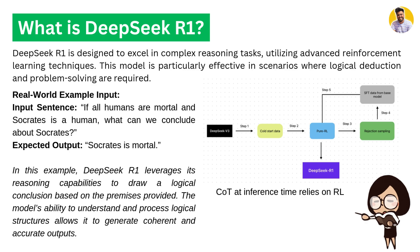DeepSeek R1 is designed to excel in complex reasoning tasks utilizing advanced reinforcement learning techniques. This is particularly effective in scenarios where logical reasoning and problem solving are required. For example, if all humans are mortals and Socrates is a human, then the model concludes that Socrates is mortal. This shows how R1 leverages its reasoning capabilities to draw logical conclusions based on given premises.